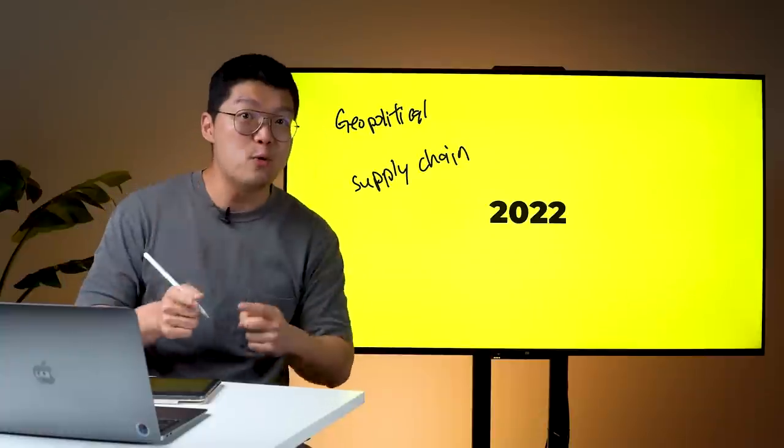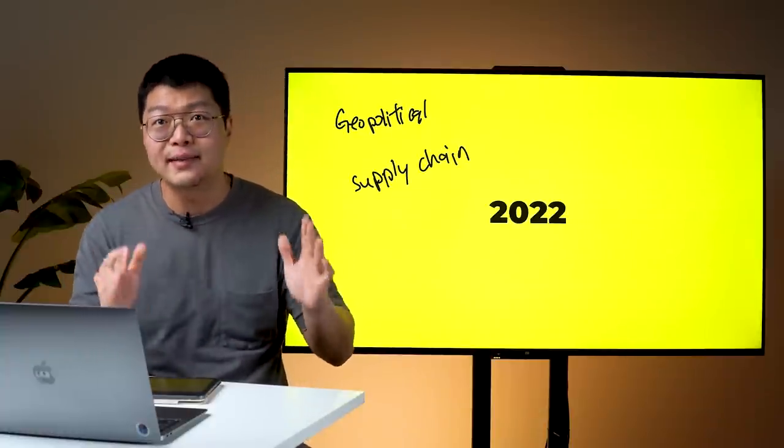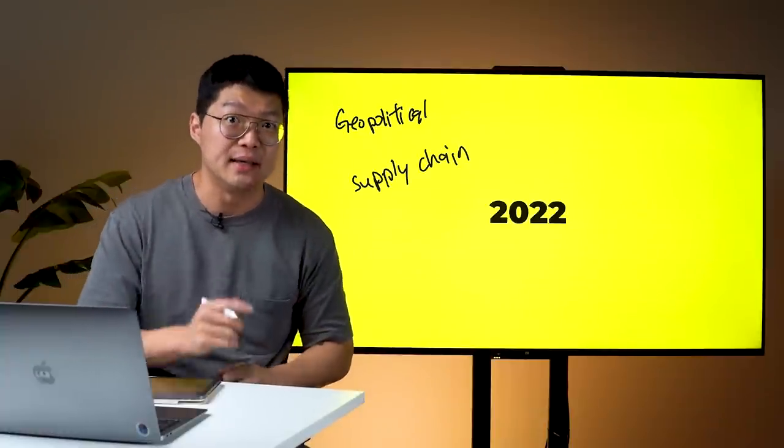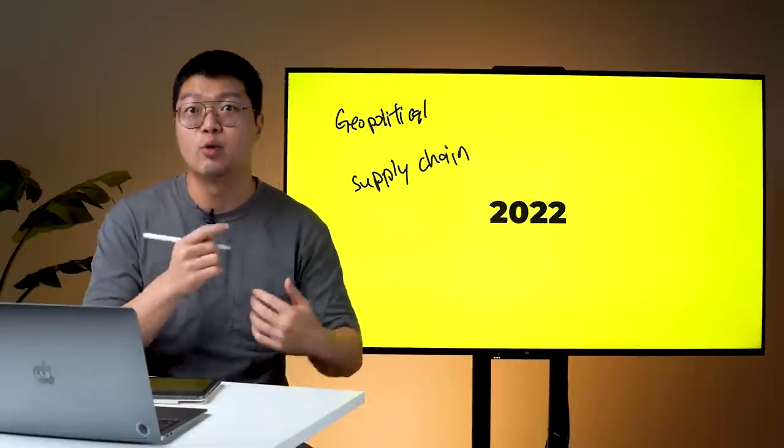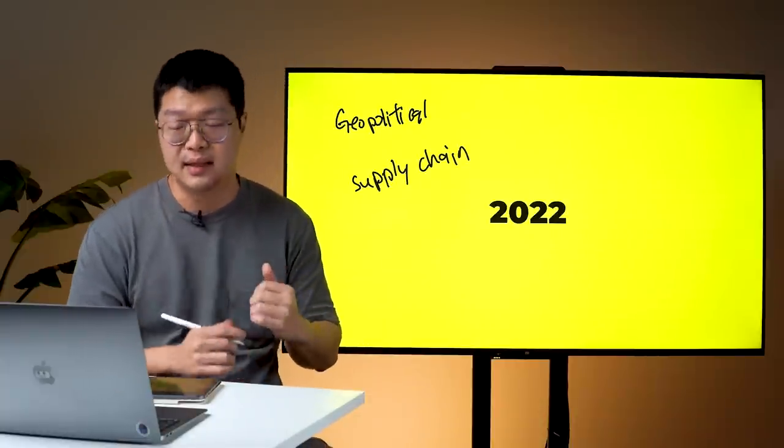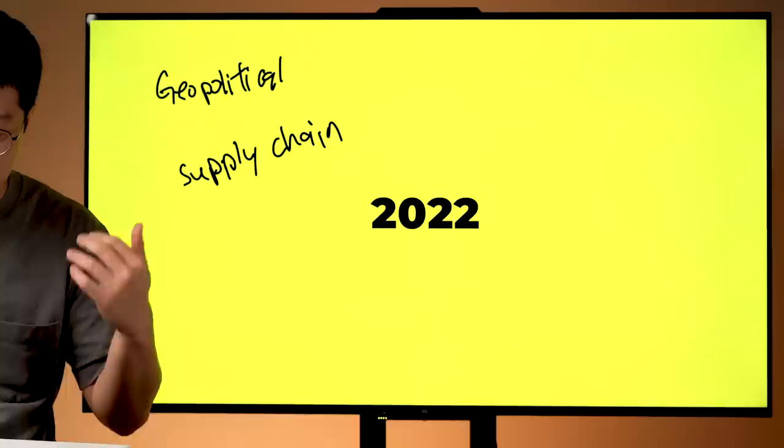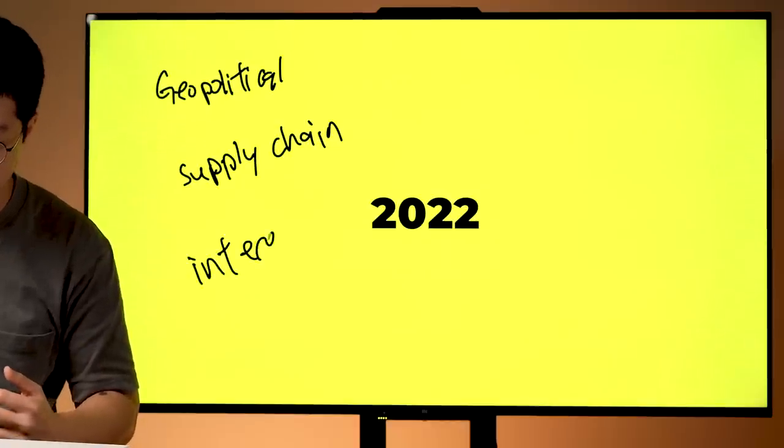On top of that, in 2022, we also experienced a very bad supply chain issue. As we can see from the global chip supply and also ultimately, even our food prices also experienced supply chain constraint.